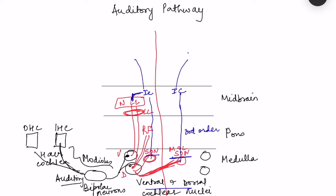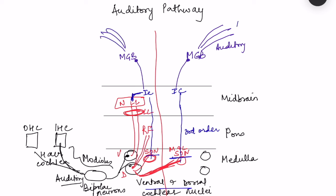From the inferior colliculus, fibers reach the thalamus — specifically the medial geniculate body — where neurons synapse again. From the medial geniculate body, auditory radiations project to the auditory cortex, which is located in the superior temporal gyrus.